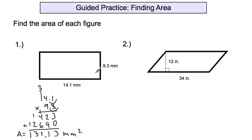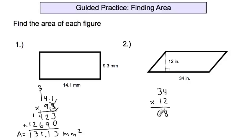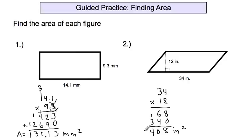When it's a parallelogram, remember you have to pay attention to the distance from the bottom to the top, not the sides. So it's 12 times 34 here. Two times four is eight; two times three is six; placeholder, one times four is four; one times three is three. Then you have eight, zero, and four. There are no decimal spaces, so it's 408 inches squared — that equals our area. The height is not the side.